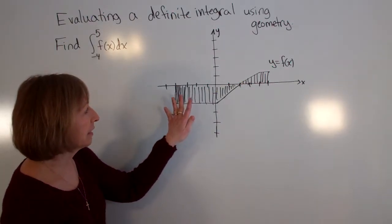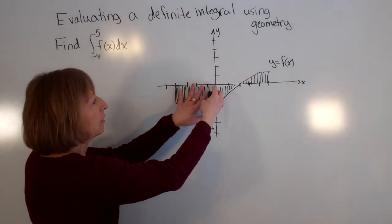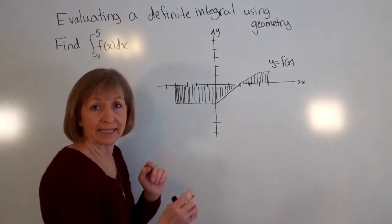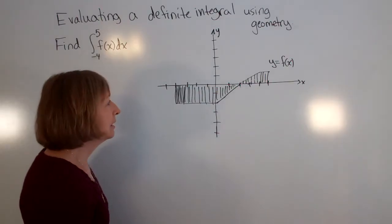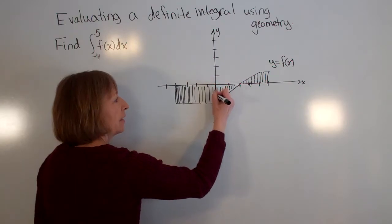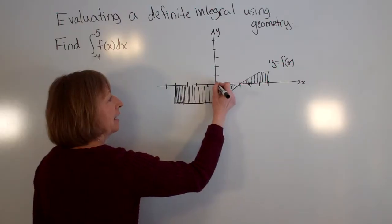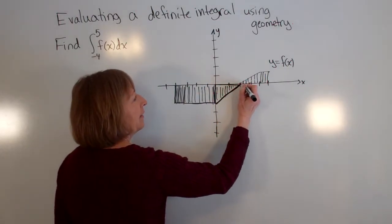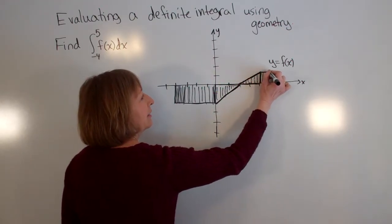We could think of this region in a couple of different ways — either as trapezoid and trapezoid, or as rectangle, triangle, triangle, rectangle. I'm going to use the rectangle, triangle, triangle, rectangle approach so you can see how we'd think about each piece. So I've got this first part that's a rectangle, then a triangle, then another triangle, and finally another rectangle.